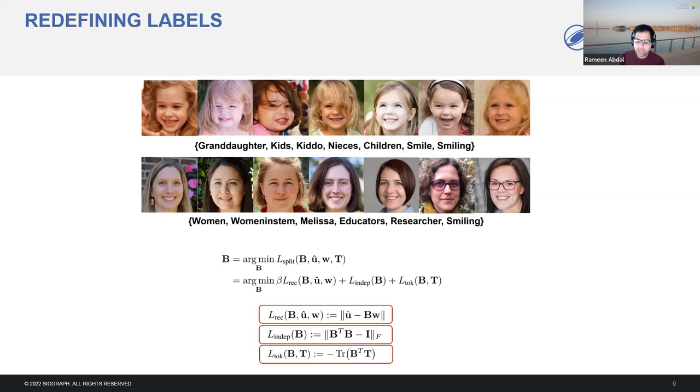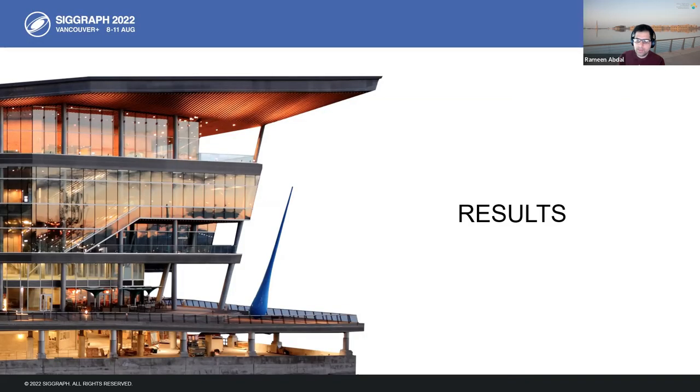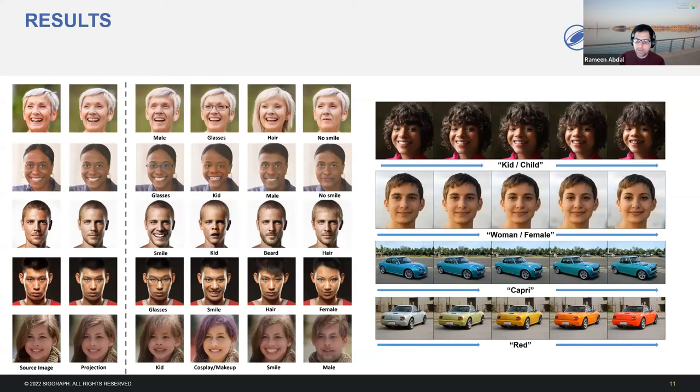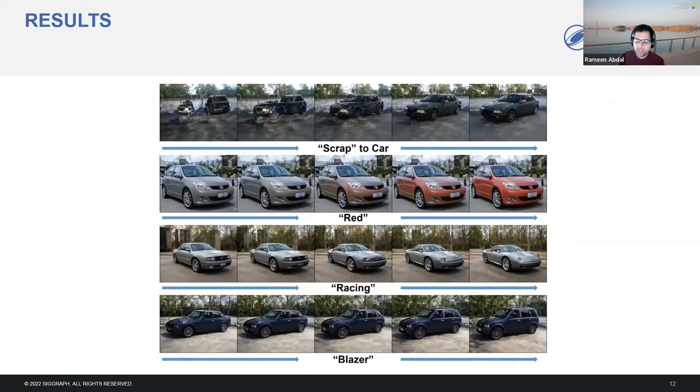Now we show some results of the extracted directions and corresponding edits achieved by our CLIP-to-StyleGAN method. Here are some results on the FFHQ and Elson-Cars dataset. The first image shows a source image and the projection of that image in the StyleGAN2 latent space. The other columns show the edits performed on these images using the extracted directions. We also show more edits involving cars in the next figure. Here we can edit the color of the cars and change the model. Here are some more results on cars. Notice an interesting edit of reconstructing car from scrap.